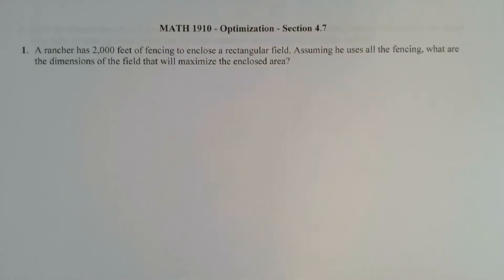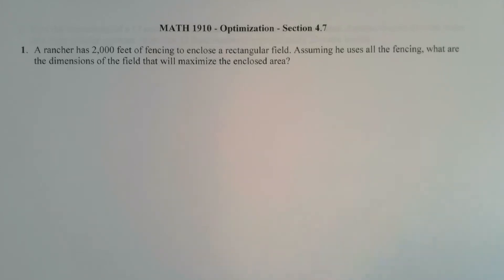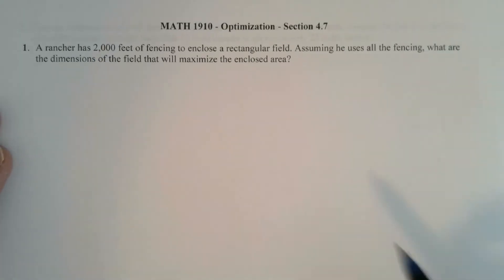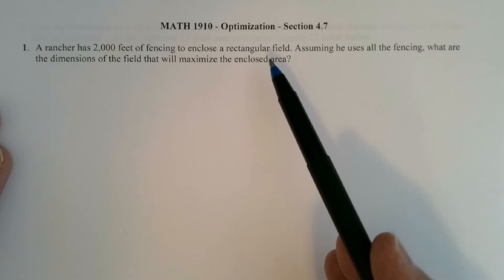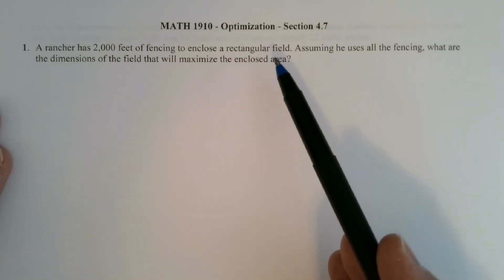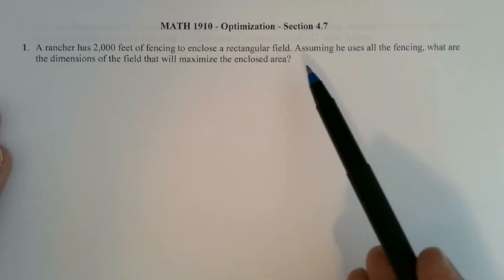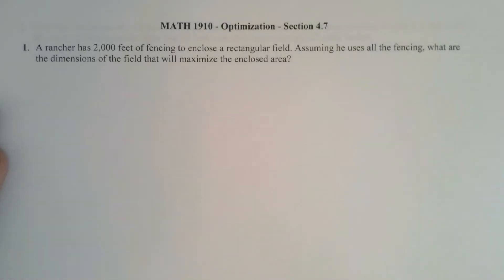Let's look at this problem. It's actually pretty familiar because we do a problem like this in pre-calculus — the function we obtain is a quadratic, whose graph is a parabola. If you remember how to find the vertex of a parabola, you can find the max or min. But we're going to use the calculus. A rancher has 2,000 feet of fencing to enclose a rectangular field. Assuming he uses all the fencing, what are the dimensions that will maximize the enclosed area?